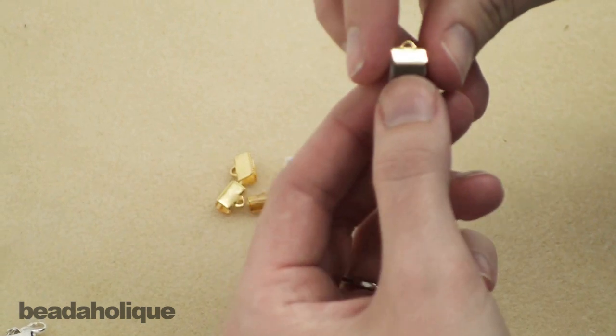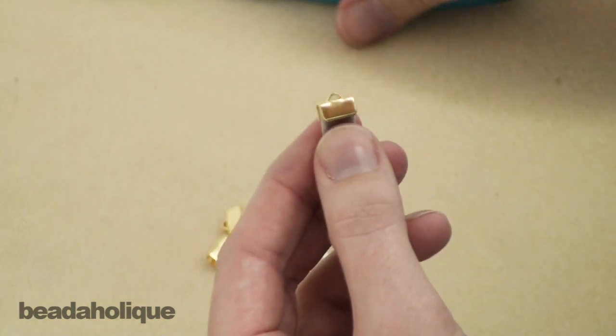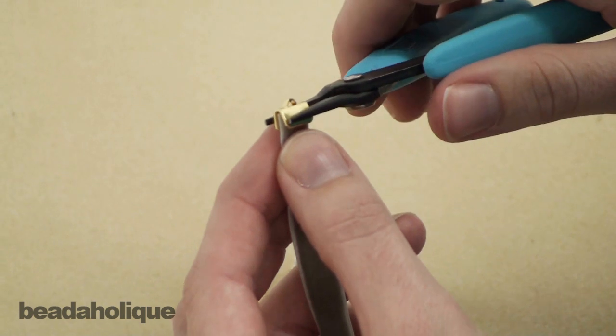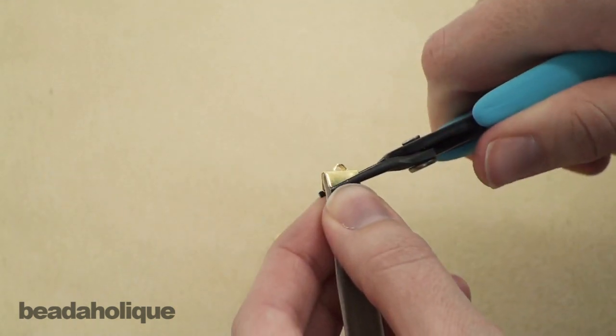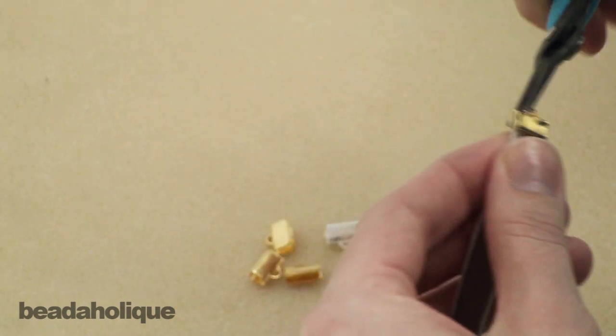Just make sure that the ribbon is all the way to the back of the crimp and then you're just going to take a pair of chain nose pliers and bend it down.